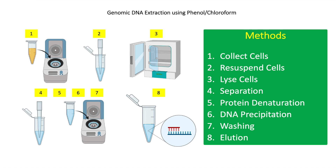For step five, add 700 microliters of chloroform and mix well. This will enhance the denaturation of remaining proteins, phenols, and lipids in the solution. Chloroform also enhances the separation of the organic phase and aqueous phase, which contains the DNA. Centrifuge at 13,000 RPM for 10 minutes. Pipette the aqueous phase and transfer into a new tube. Repeat once.